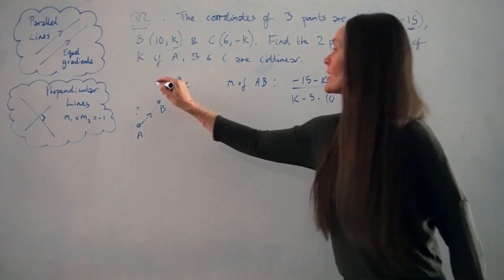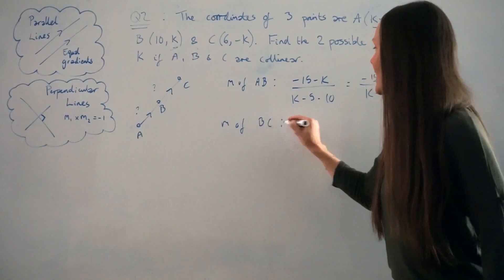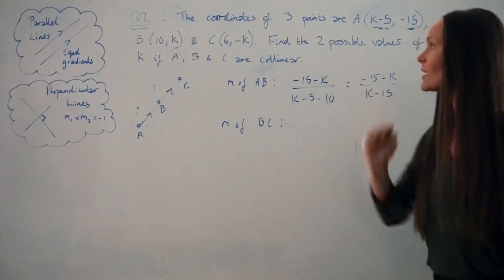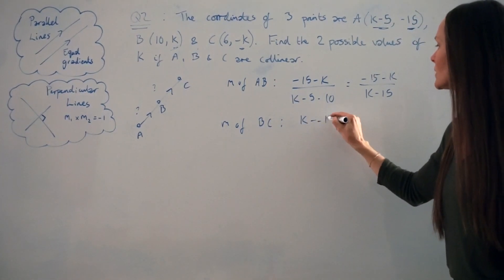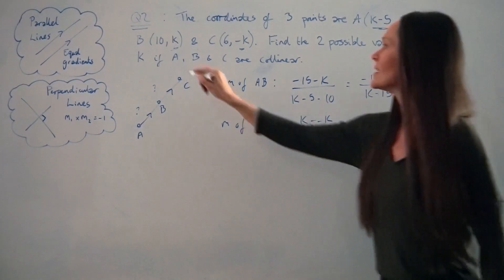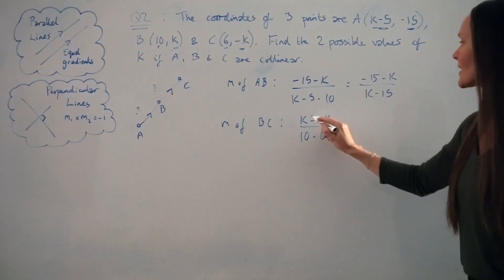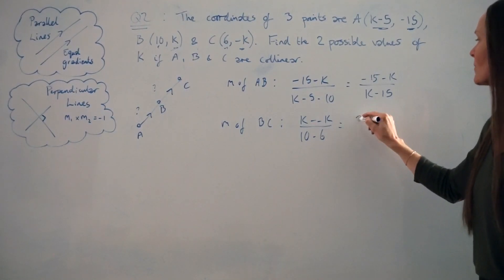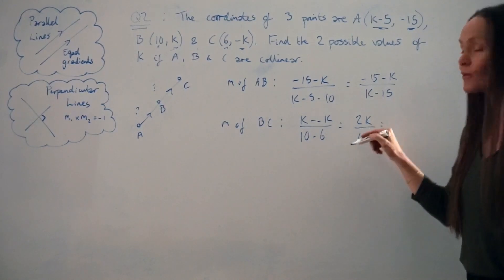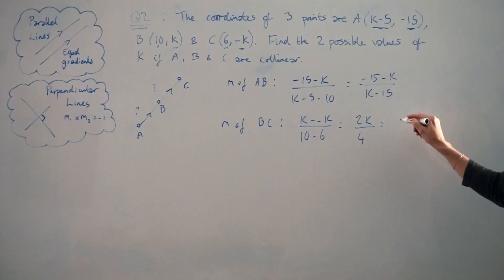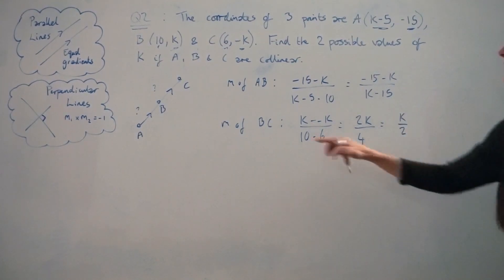Now finding the gradient of line BC — M of BC. Subtracting the Y values: K take away negative K — watch out for the double negative. Divided by 10 take away 6. K take away negative K is K plus K, which is 2K. And 10 take away 6 is 4. Simplifying by 2, I get K over 2. So the expression for the gradient of BC is K/2.